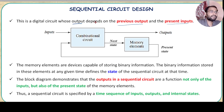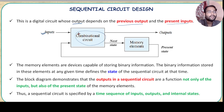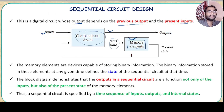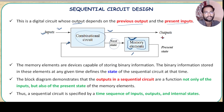By definition, the output depends on the previous output and the present input. The image shows that input is given to a combinational logic circuit — in digital electronics, whatever output you need is a combination of logic gates. Some output is there, and to know what the next output will be, I need the previous output. There will be a circuit here which will store the previous output and it will be used in the present circuit. The previous output along with the current input will give me the current output — this is how the sequential logic circuit works.